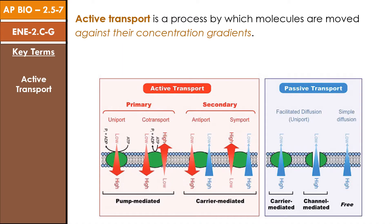In many biological situations, there is a different concentration of a particular ion or small molecule inside compared with the outside of a cell. In these cases, the concentration imbalance is maintained by a protein in the cell membrane that moves the substance against its concentration gradient. This is called active transport, and because it is acting against the normal flow, it requires the expenditure of energy.